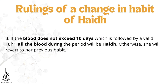Today we will be discussing the third rule. If the blood does not exceed ten days, which is followed by a valid tuhar, all the blood during the period of habit will be hayz; otherwise a woman will revert to her previous habit. So far we discussed when the blood exceeds ten days. Now we are discussing when the blood does not exceed ten days. If it does not exceed ten days, you count from the first spotting. If it exceeds ten days, you revert to your previous habit.